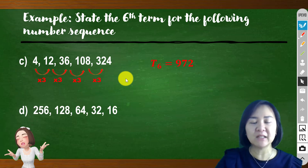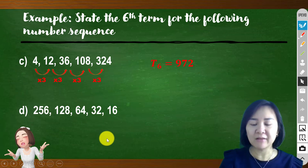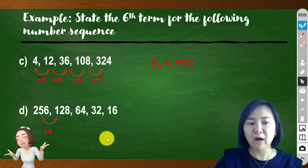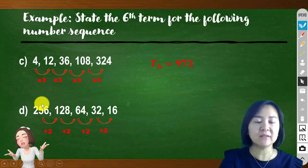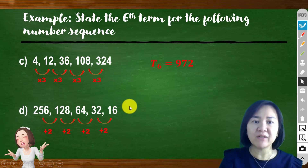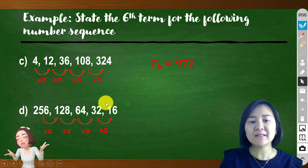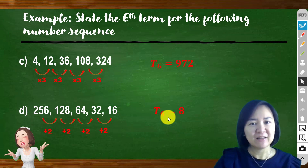Another example: the sequence 256, 128, 64, 32, 16 is in decreasing order. The pattern is divided by 2. These are terms 1 through 5. To determine the sixth term, take the previous number divided by 2: 16 divided by 2 gives us a sixth term of 8. This is how we determine terms of a sequence by identifying the patterns and listing down all the terms.